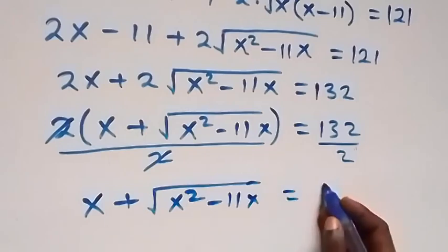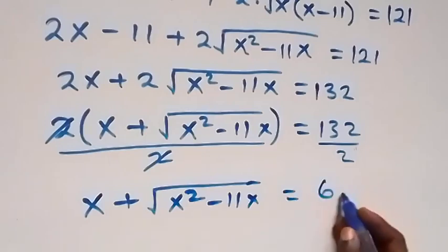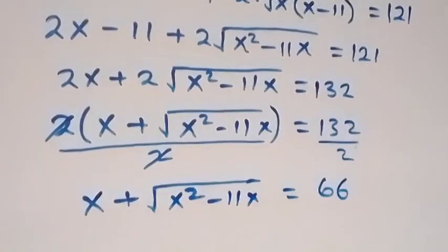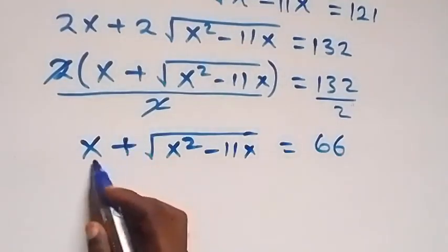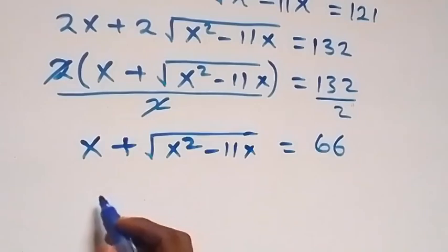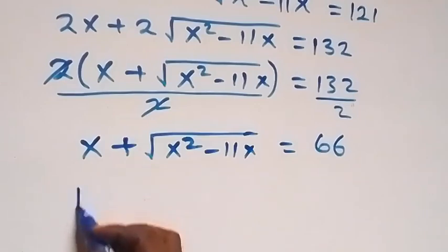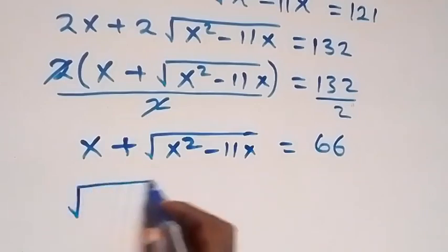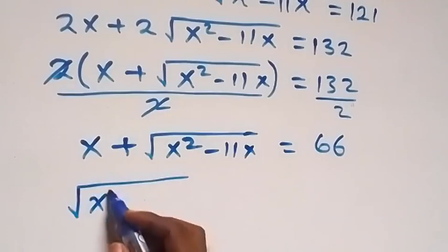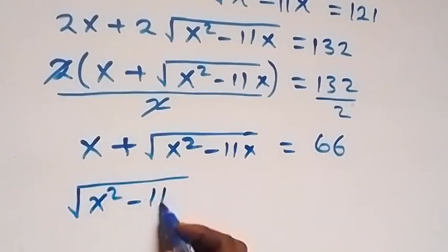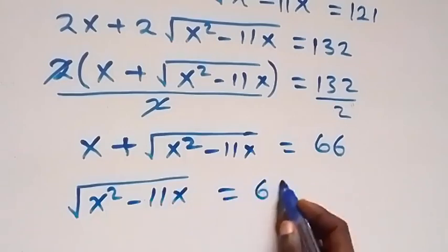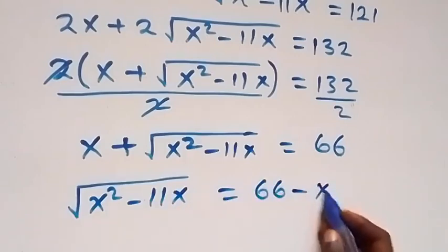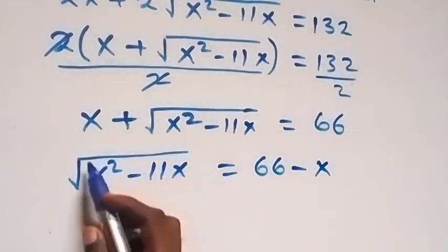Now equals to 66. Next step, we take x to the other side, and from here we are left with square root of x squared minus 11x equals to 66 minus x. Then from here, to remove the square root, we can take the square on both sides.